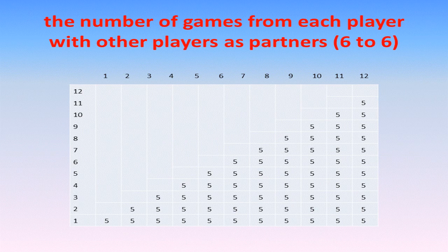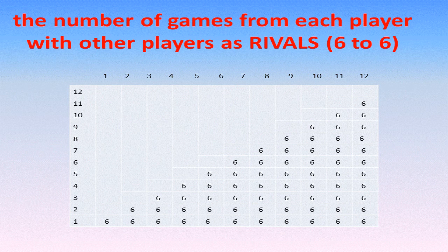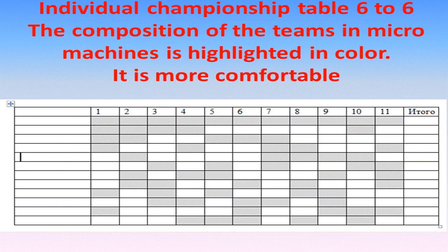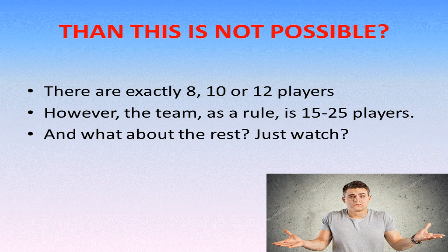Both for partners and for rivals. As a result, the difference of scored and missed goals combined from micro-matches means the total difference of the player depends only on the player himself.